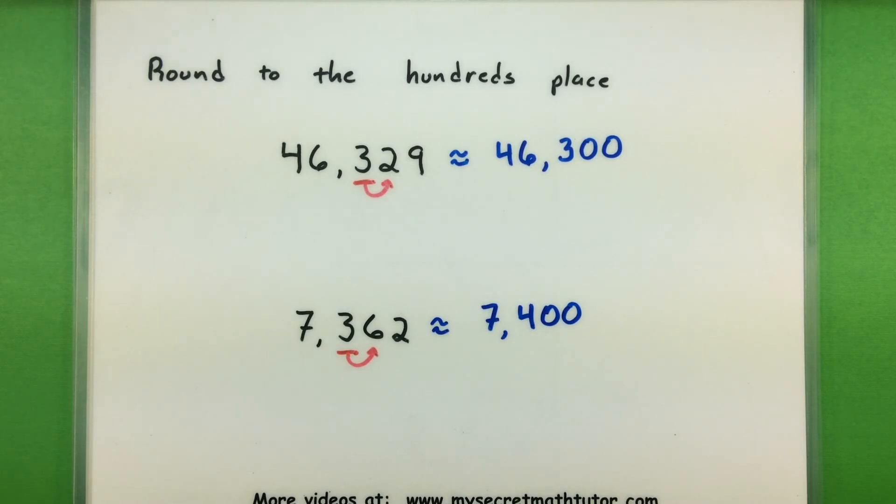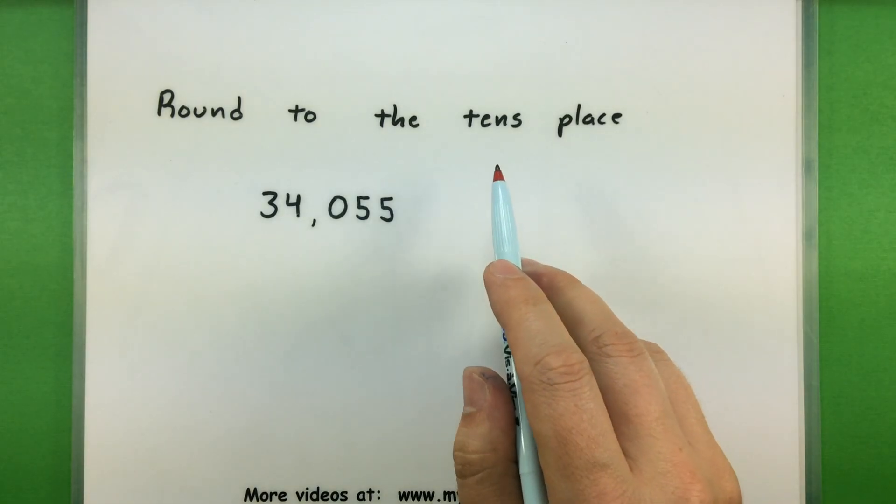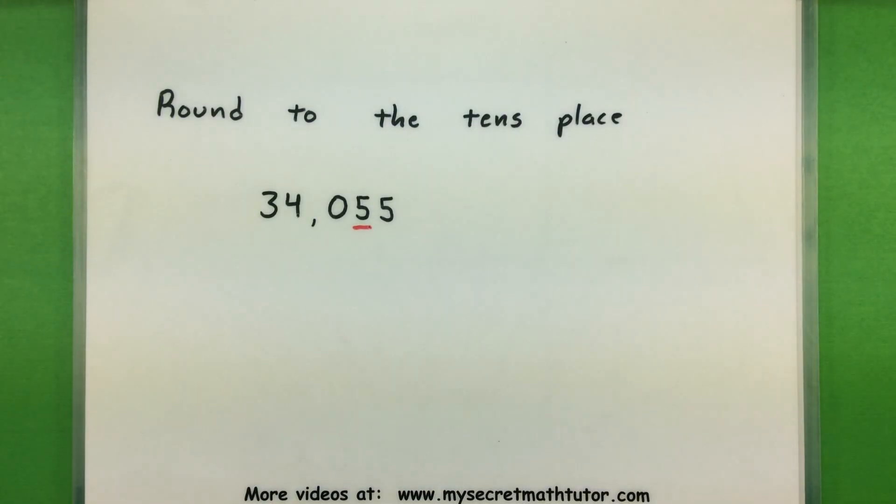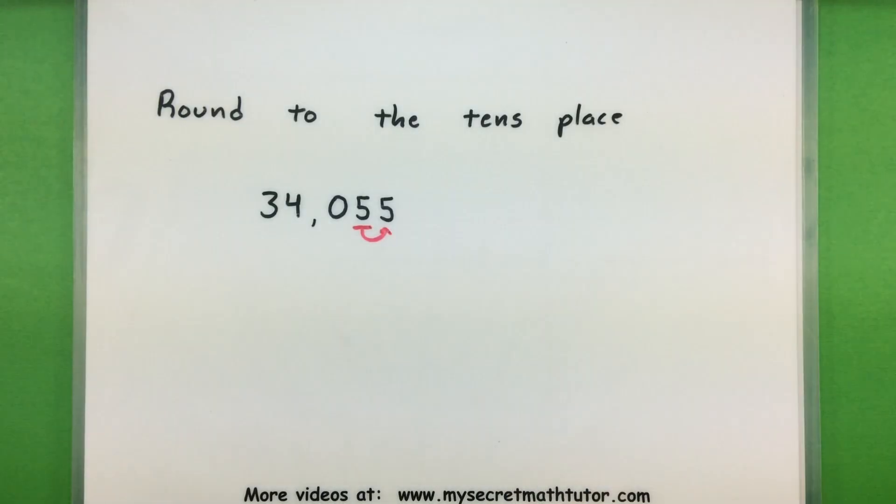Rounding is kind of a tricky process, so we will go through a few more examples so you get a better idea of how this is working. This next one we want to round to the tens place—not ten thousands, not hundred thousands, just the tens place. So that would be this 5 right here. Checking it off to the right side there, I can see that it's a 5, so we need to round this one up.